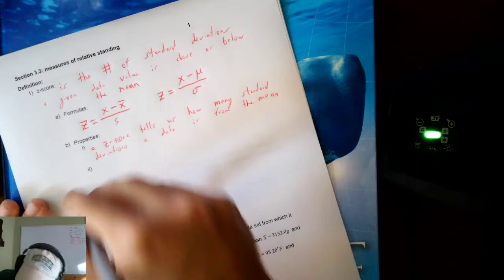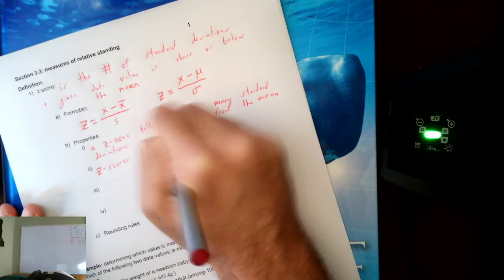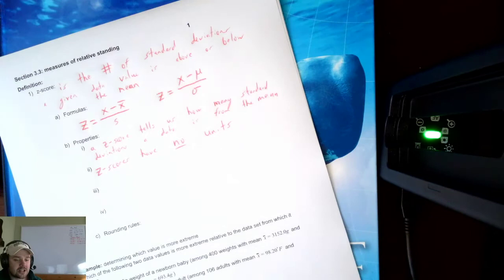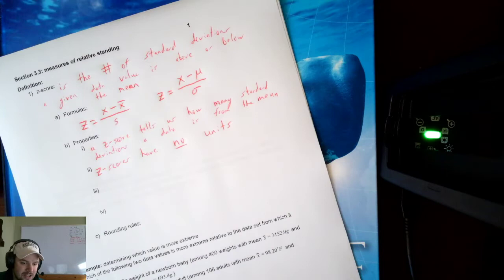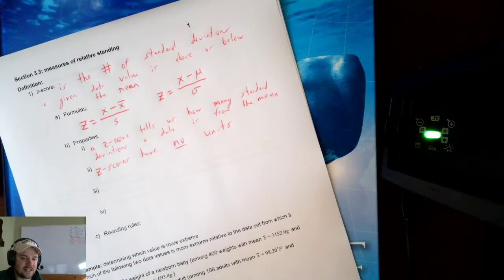Second, z-scores have no units. So if your original data is in feet — say you're measuring lengths of houses — your z-scores do not have feet as their unit. There is no unit for z-scores. Keep that in mind.